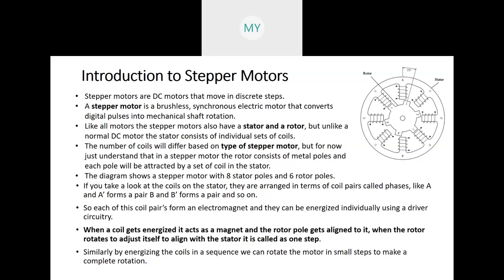A stepper motor is different from basic DC motors and synchronous motors in the manner that its motion is controlled using digital pulses. In simple motors, the motion is continuous, but in a stepper motor, as the name suggests, the motion is in discrete steps. These steps can be controlled by digital pulses, a control circuitry, a controller, or a computer.